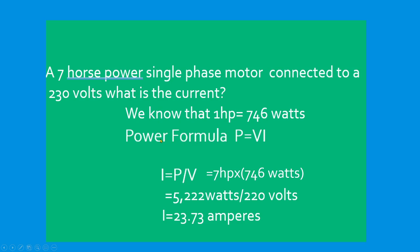Power equals P equals V times I. We're going to transpose it. I equals P over V. 7 horsepower times 746 watts because our known is 7 horsepower.